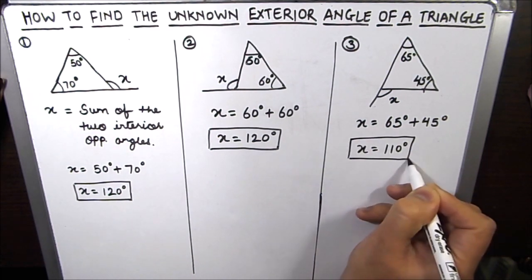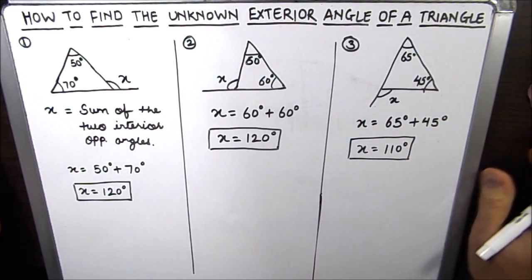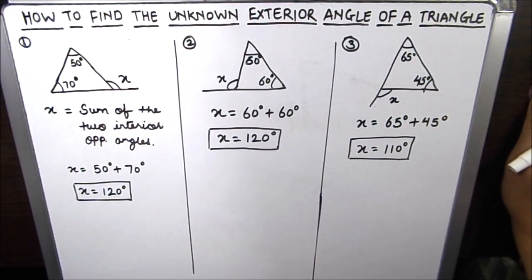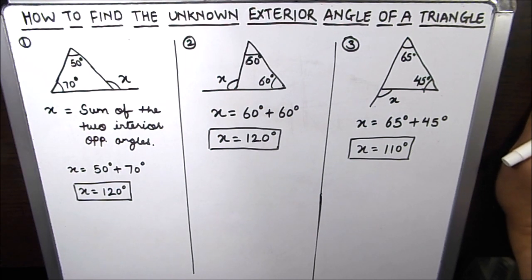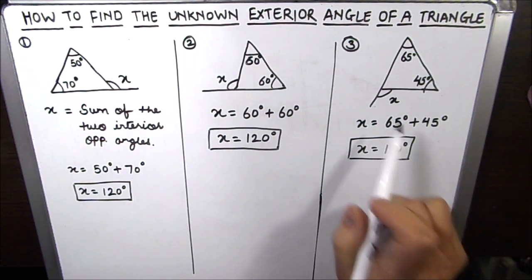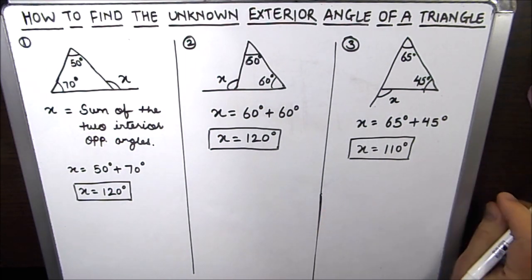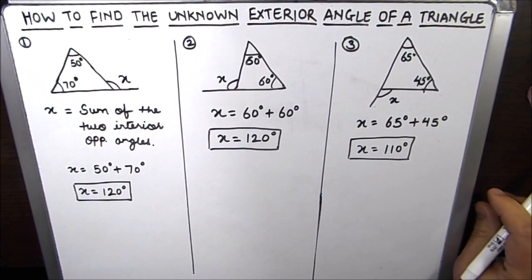So this is how, by using the theorem that the exterior angle of any triangle is equal to the sum of the two interior opposite angles, you can find the exterior angle of a triangle. Thanks for watching!